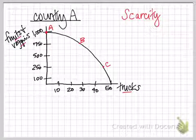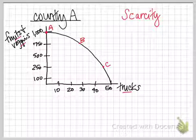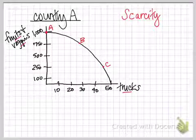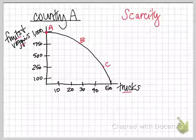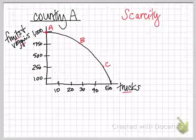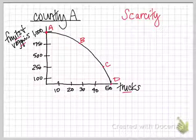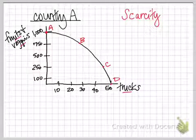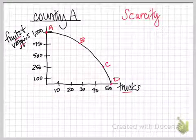And so that's some things that we can see here. Some other things we can see on our PPF. We could be at point A, where all of our resources go to fruits and vegetables. So we have a thousand units, but we have zero trucks. Or we could be all the way down here at point D, where we're producing 50 trucks, but now we have nothing to eat. We have no fruits and no vegetables.